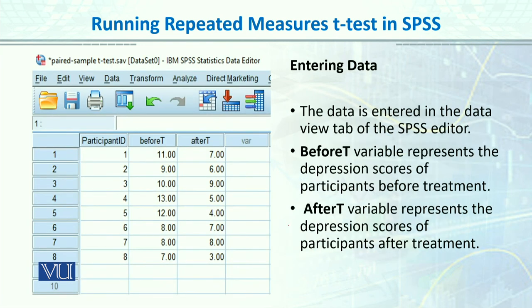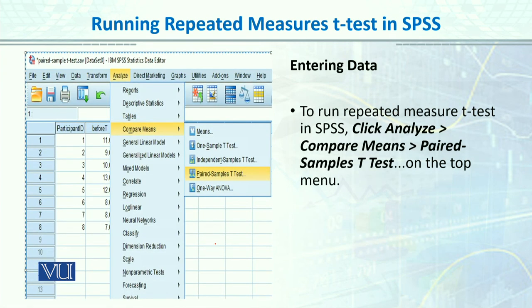When we enter the data, the SPSS data file will look like this, containing one variable for before treatment, one variable for after treatment, and a third for the participant's ID. Similarly to what we have done earlier, you will go to Analyze, then Compare Means, and then Paired Sample T-test.